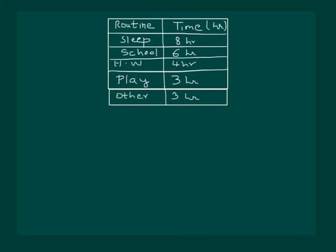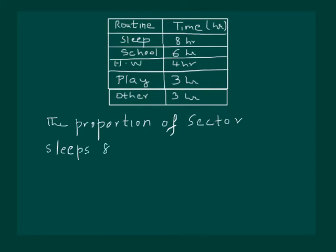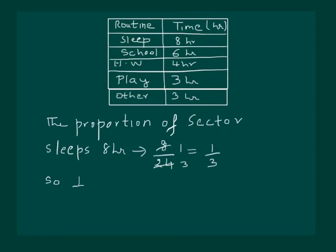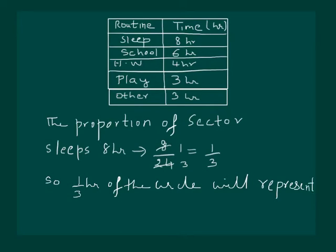Now we have to draw the pie chart. The first thing we have to do is find out the proportion of each sector. Since he sleeps 8 hours, the proportion is 8 hours out of 24 hours, which is equal to 1/3. So one third of the circle will represent the hours he sleeps.